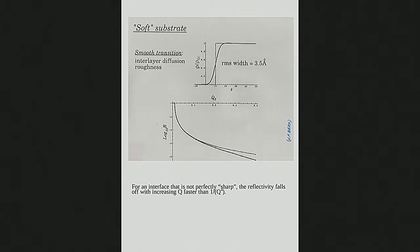Suppose that same sample has an edge that's not perfectly sharp but is diffused or has a lot of structure in it — averaged over in-plane. Then instead of looking like the sharp profile, it becomes some kind of shape. As soon as that happens, you still have a critical angle, but the reflectivity falls off even faster than 1/Q⁴. So right away, if you have a surface and want to know how rough it is, all you have to do is measure the specular reflection as a function of Q and see how fast the scattering falls off. If it falls off as exactly 1/Q⁴, it's perfectly sharp; if it falls off faster, you can model and fit to find out how wide the interfacial region is.